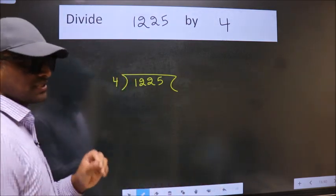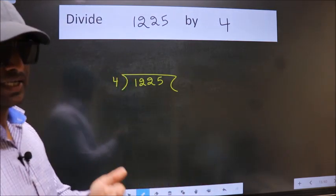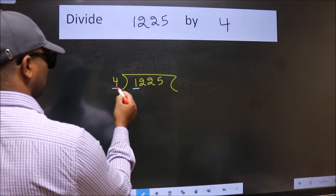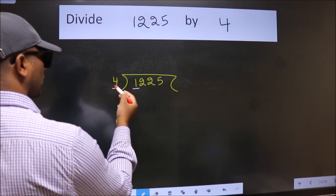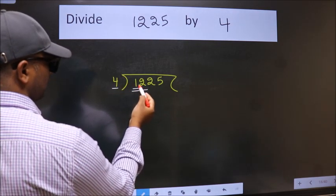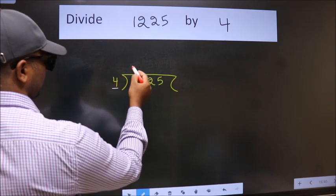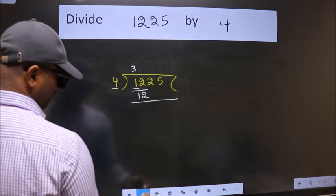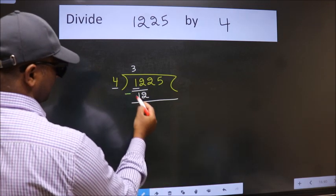This is your step 1. Next, here we have 1, here 4. 1 is smaller than 4, so we should take 2 numbers: 12. When do we get 12 in the 4 table? 4 times 3 is 12. Now we should subtract. We get 0.